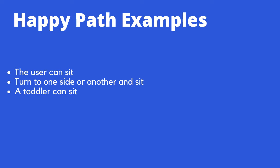So first, the happy path examples. The user who is an adult can sit and turn to one side or another and sit. The user is a toddler and can sit but might not be able to touch the floor with their feet. All of these scenarios are happy path — the user is able to execute the function which the chair was designed for.